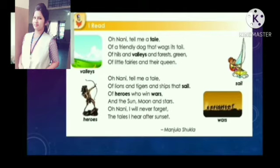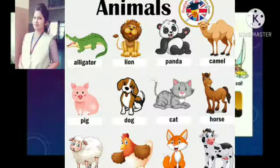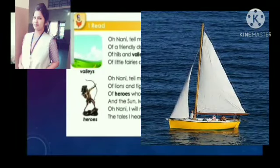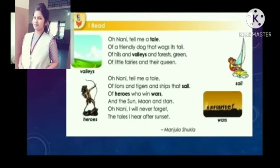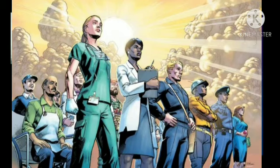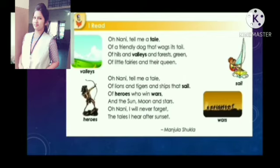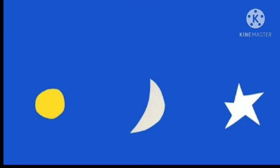In the second stanza, she again asks her Nani to narrate a story. This time she wants to hear stories about lions and tigers — animals — and ships that sail, about people who travel to different countries by ship. She also wants to hear about heroes who win wars, and about the sun, moon and stars.